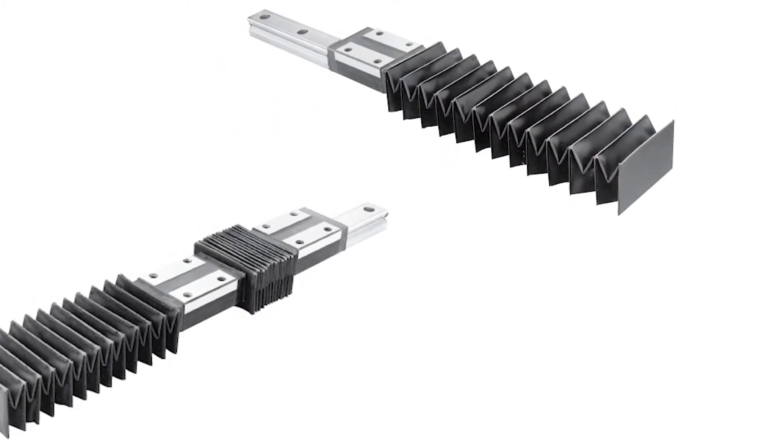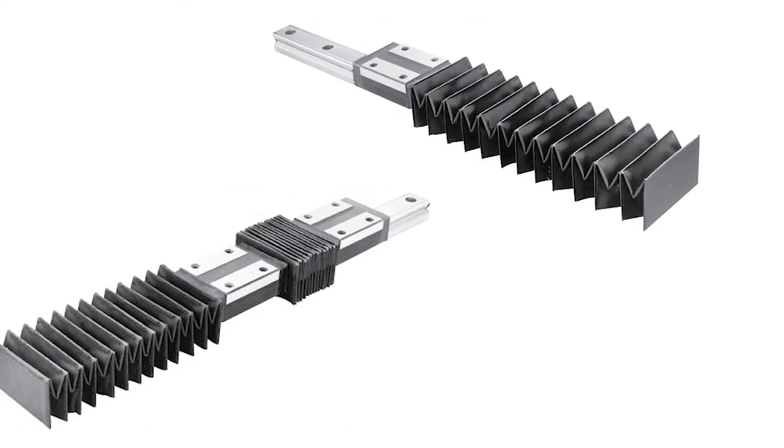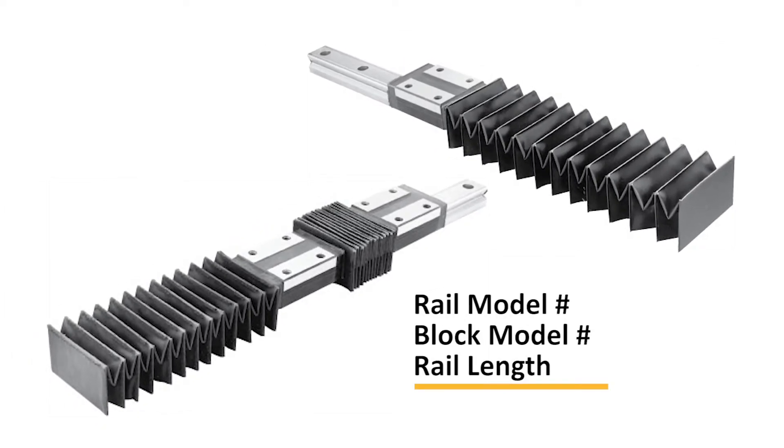If you are covering a commercially available linear rail, provide the make and model of the rails and the bearing blocks as well as the rail length. This information may be found in the machine's product manual.